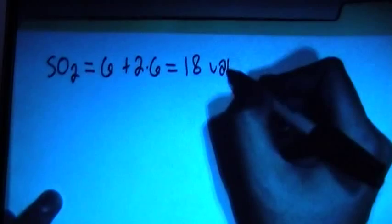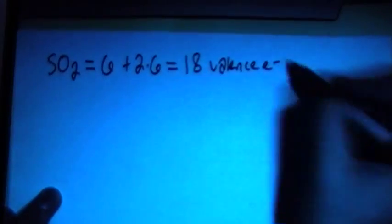So here we go. We've got SO2, the chemical formula, and that's going to give us 6 valence from the sulfur plus 2 oxygens, each of which bringing us 6 valence electrons. It's going to give us a total of 18 valence electrons.